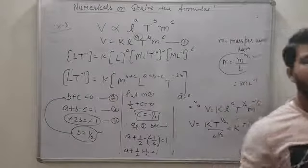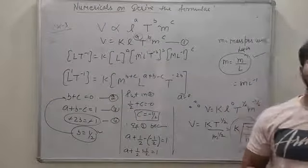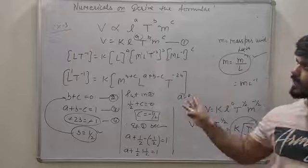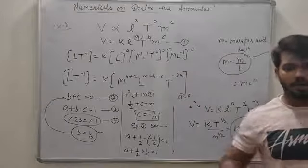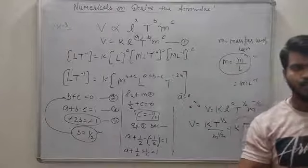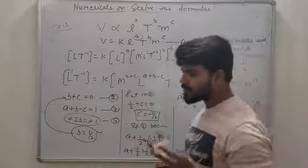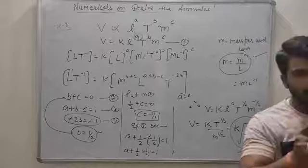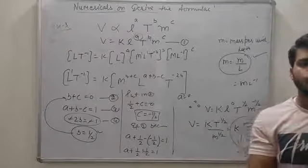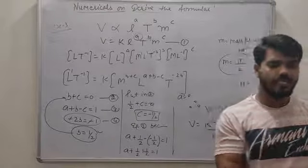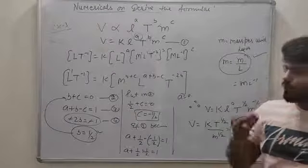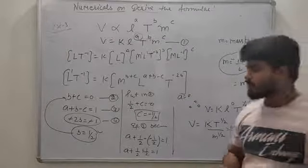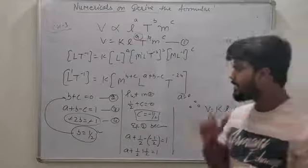यह आपका तीसरे type का numerical है। पहला type था homogeneity के ऊपर, दूसरा type correctness के ऊपर, 3rd type है derive the formula। 4th type अगले video में करवाया जाएगा — conversion वाला। फिर error के ऊपर numerical आएंगे। First unit में numericals के अलावा कुछ नहीं आने वाला — dimensional formulas limited कर लो। I hope सब clear हो गया — आज के लिए इतना ही, thank you so much।